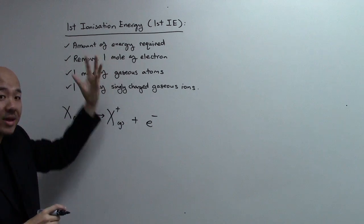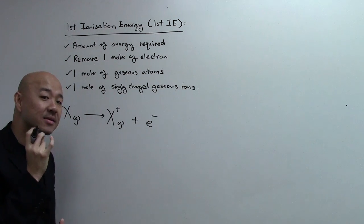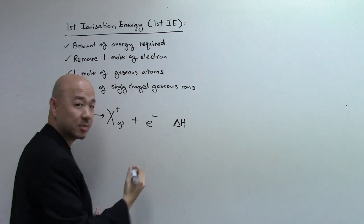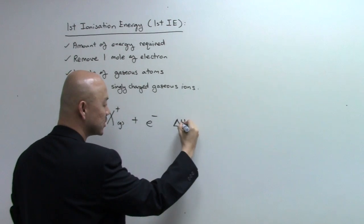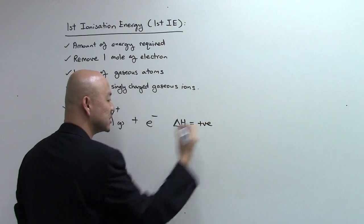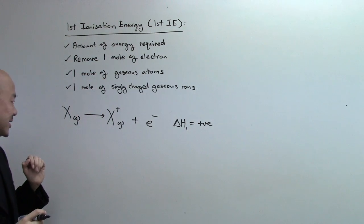Because the amount of energy required is absorbed, this is an endothermic process. So, ΔH, the enthalpy change for first IE, ΔH1, will then be a positive value in terms of kilojoules per mole. That's first IE.